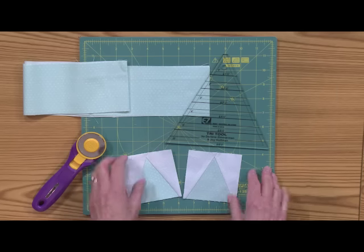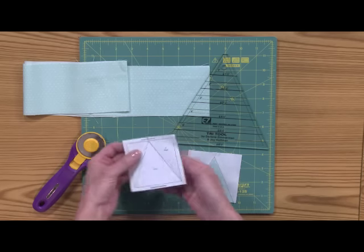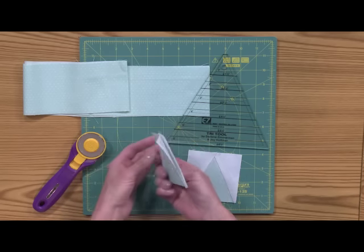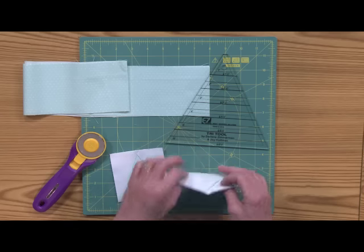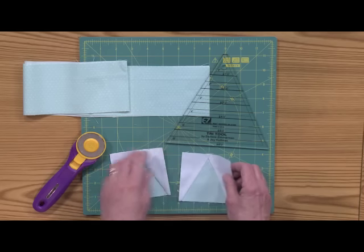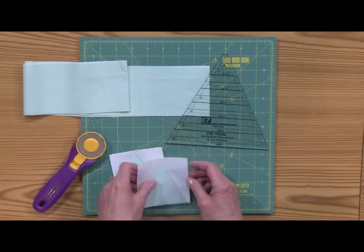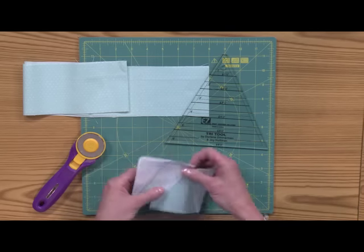There's a couple different ways you can make this triangle unit. You can use the foundation paper that's provided, use the templates and cut the patches and sew them together. I'm going to show you how to use the tri-rex ruler to cut the A and B templates.